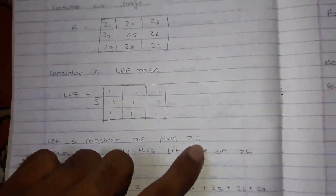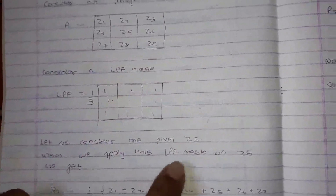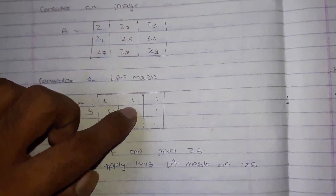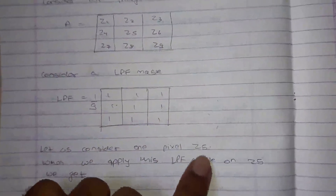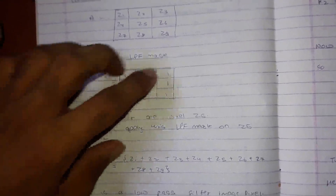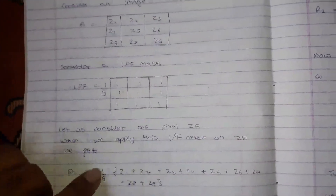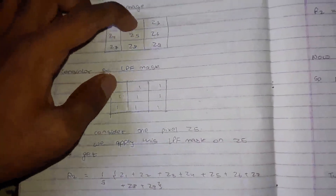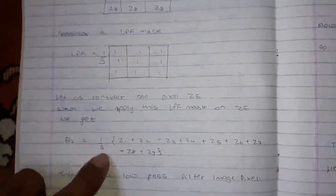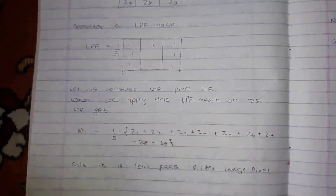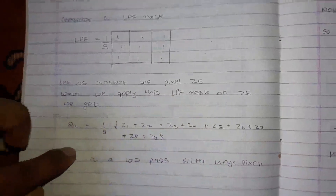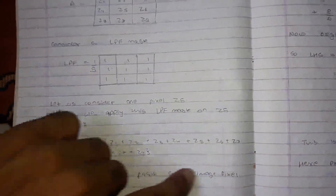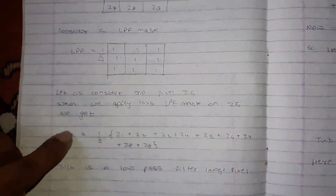Now let us consider one pixel, that is Z5. We will apply the low pass mask on Z5 — we are going to apply the whole mask on this pixel. The center pixel of the mask should go on Z5. What will happen is Z1 gets multiplied to 1. There is a 1/9 factor taken common outside. So we get (1/9)(Z1 + Z2 + Z3 + ... + Z9). This is the low pass filtered image pixel of Z5 — after the low pass filter, Z5 will become this value. Let us name it R1.